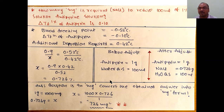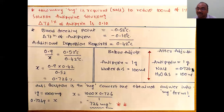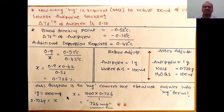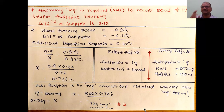Before adjustment: antipyrin 1 gram, water quantity sufficient to 100 ml. After adjustment: antipyrin 1 gram, NaCl 0.726 grams, water quantity sufficient to 100 ml. Since the question asks for mg, convert: 0.726 grams × 1000 = 726 mg. That is the final answer. In competitive exams, watch out — if the answer choices show 0.726, check whether the question asks for grams or mg.